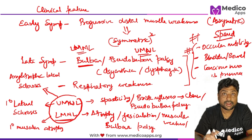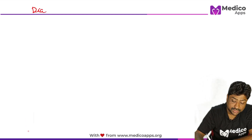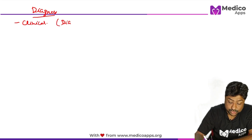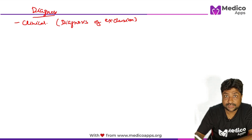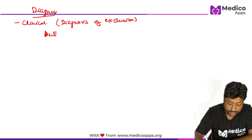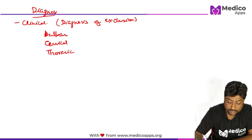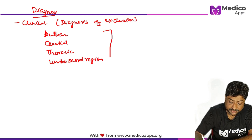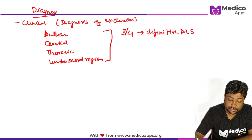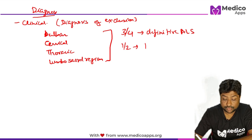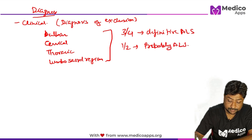ALS is diagnosed clinically and is also a diagnosis of exclusion. The condition affects the bulbar region, the cervical region, the thoracic region, and the lumbosacral region. If three or four of these regions are affected, we call it a definitive case of ALS. If only one or two are affected, we call it a probable case of ALS.